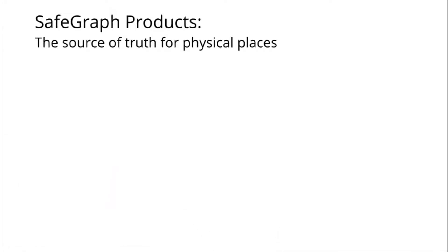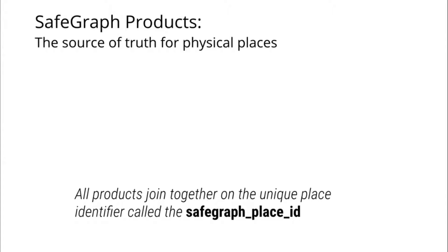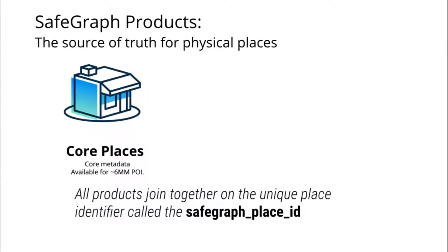Let me make this more concrete and explain what our products actually are. SafeGraph is the source of truth for physical places, and we summarize the physical world in three data sets that can be easily joined together. They share the same primary key — a unique point of interest ID we call the SafeGraph Place ID — so you can think of each data set as one row per point of interest with different columns and attributes. The foundational data set is what we call Core Places: all the foundational metadata about a place, like its name, address, phone number, category information, and whether it belongs to a major corporate brand or chain.